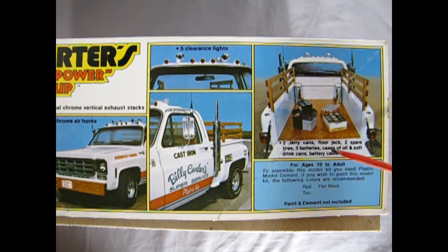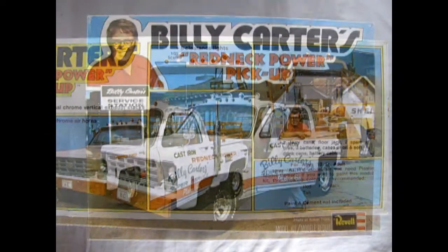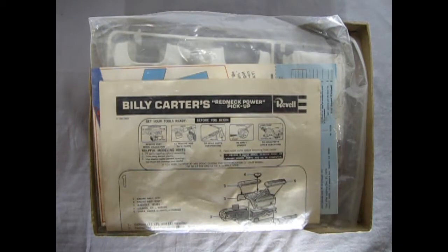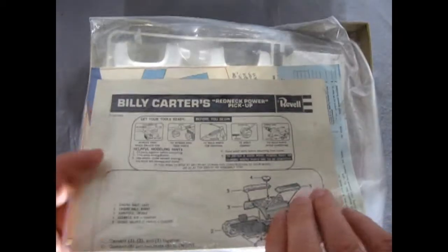And two jerry cans, floor jack, two spare tires, three batteries, cases of oil and soft drink cans, Billy Beer cans maybe, and battery cables. And now let's pull the lid off this model kit and actually see what's inside here. Maybe a case of Billy Beer? No.